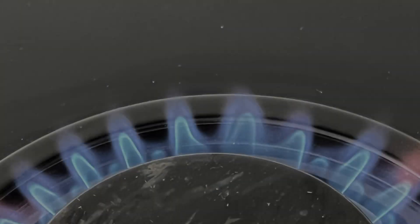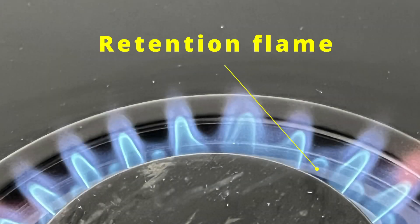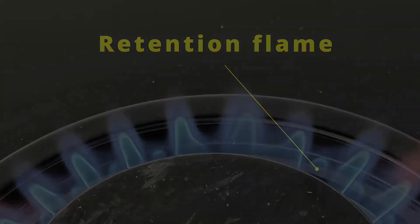The secret then is something called a retention flame. To understand what that is, we need to go back over to the gas hob and take a closer look.